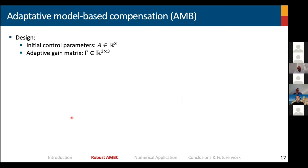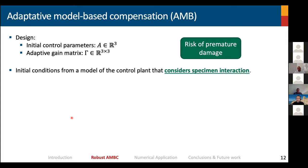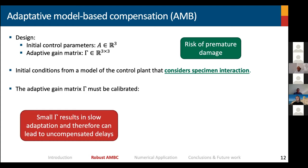Originally, the adaptive model-based compensation approach, the design incorporates designing the initial control parameters A and proposing an adaptive gain matrix gamma. The initial conditions usually are obtained from a model of the control plan considering specimen interaction. But doing so will have a risk of prematurely damaging the specimen, which is something that we don't want. So is it possible to avoid that using a new approach? And second, we need to decide what value of gamma will be used.